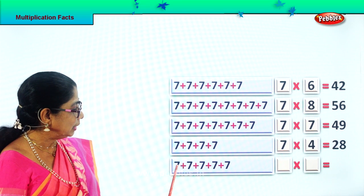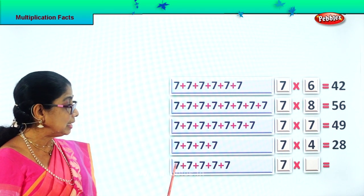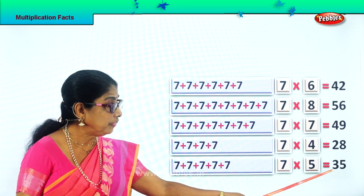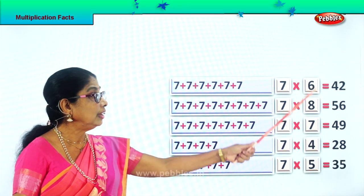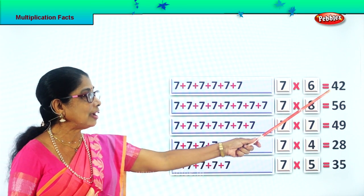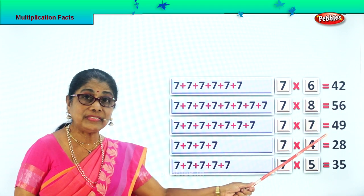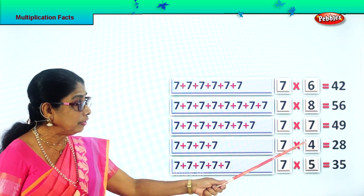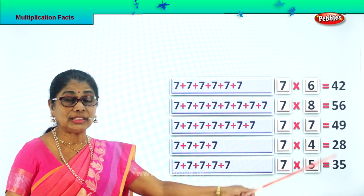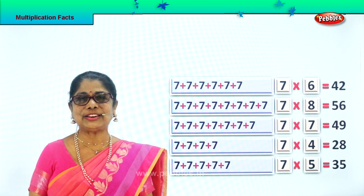Finally, we have 7. 1, 2, 3, 4, 5 times. 7 how many times? 5. 7 fives are 35. Look at our multiplication. Say it again: 7 sixes are 42. 7 eights are 56. 7 sevens are 49. 7 fours are 28. 7 fives are 35. All these are our multiplication facts.